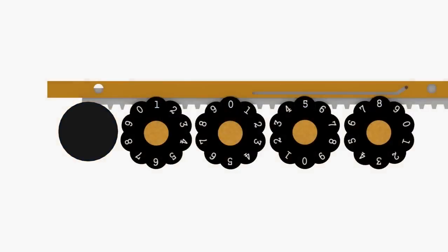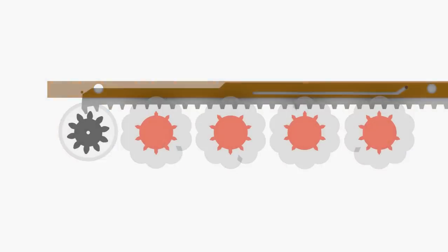The accumulator can be reset to zero by first lifting the carriage to disengage the result dials from the bevel gears and then turning a knob on the left side of the carriage. Each accumulator dial includes a 10 tooth zeroing gear where the tooth corresponding to the zero numeral has been removed.